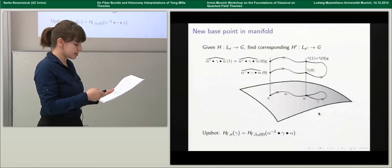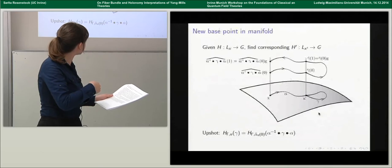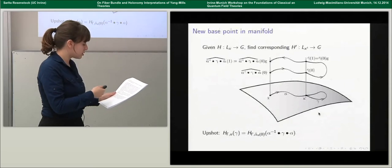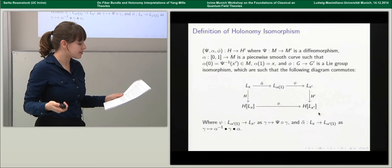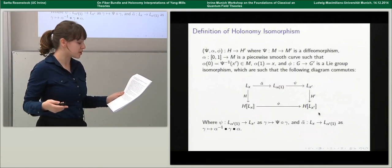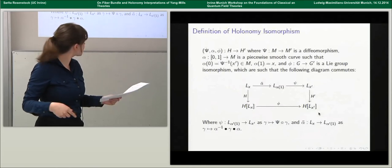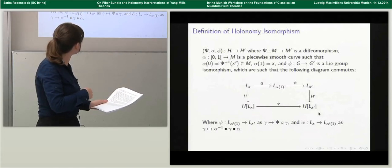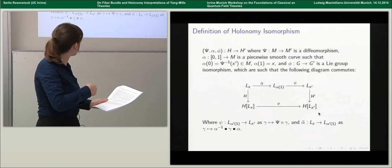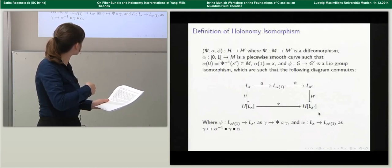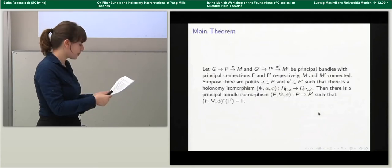It looks a bit strange because the loops at x have tails, but it turns out you still get representatives from each equivalence class of thinly equivalent loops, so it works out. These considerations indicate a definition of holonomy isomorphism as a triple consisting of a diffeomorphism of the spacetime manifold, a spacetime curve corresponding to a change of base point, and a Lie group isomorphism of the range of the holonomy map. This is illustrated by a commutative diagram.